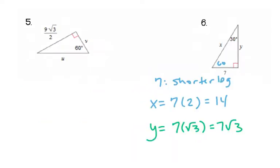For number 6, since 7 is the shorter leg, you are going to double it to get the hypotenuse, and so that would be 14. To get the longer leg, you're going to multiply the shorter leg times square root 3.